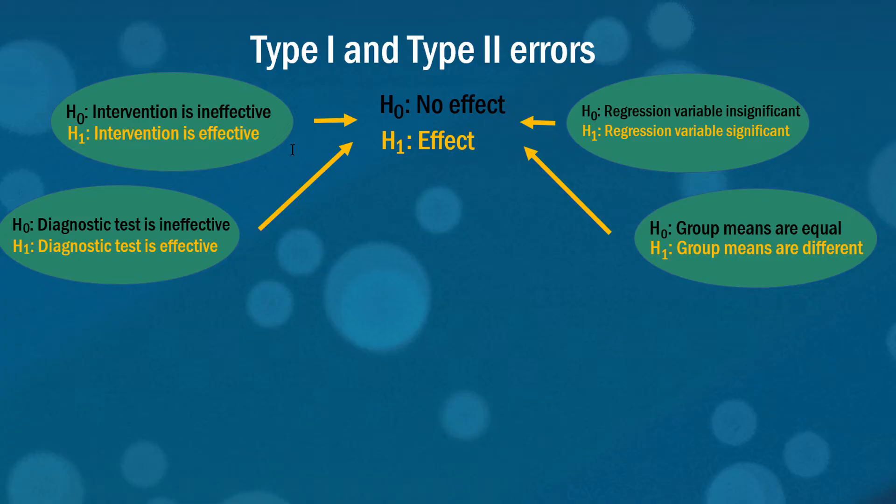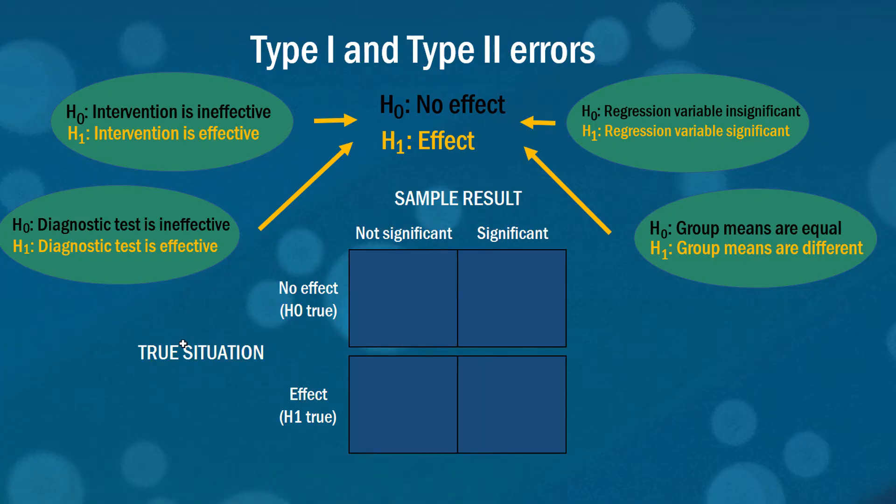Pretty much every hypothesis test is going to fit this description. What we'll have is a true situation which we can never know, and then we have our sample results. We usually take a sample of something and try to assess using that sample whether there is an effect or not, or we can say that the effect is significant or not significant. I'm hoping you're seeing the similarities between this and the courtroom example.